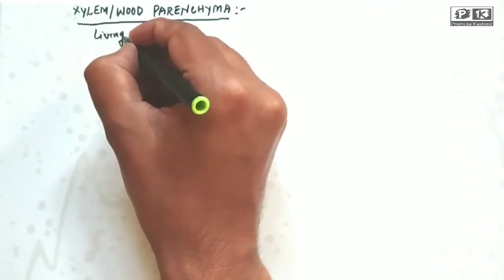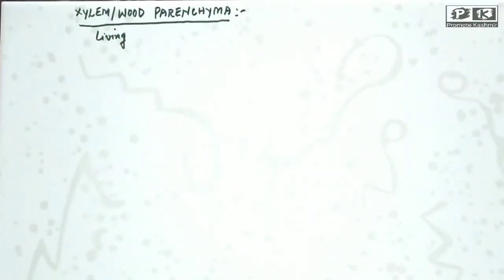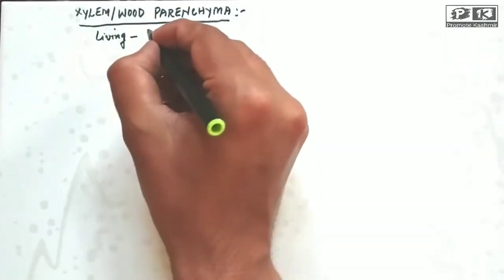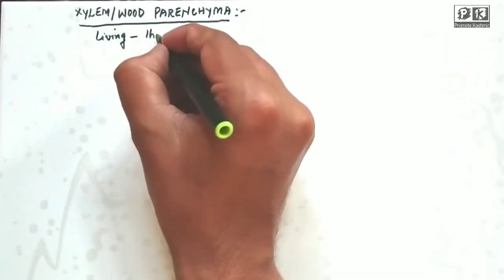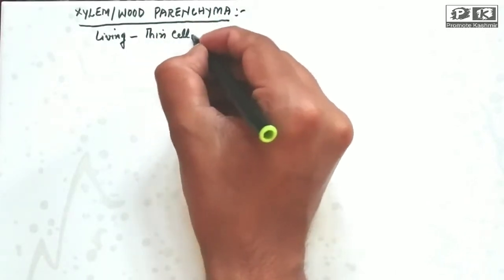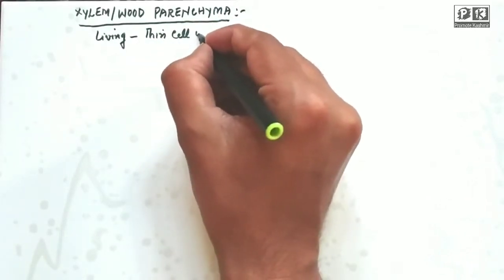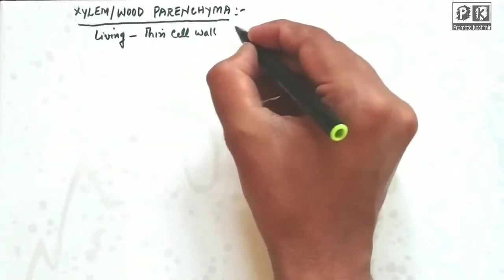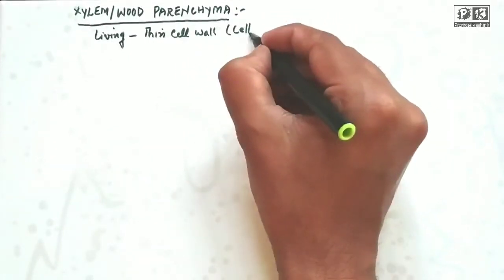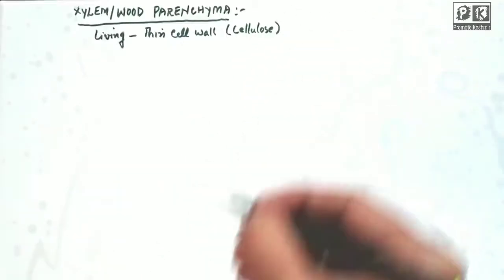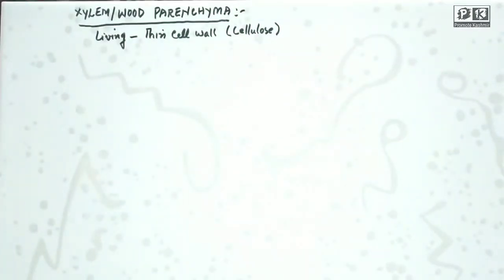Unlike other dead xylem elements, xylem parenchyma has thin cell walls. The other elements have thick cell walls. Because the cell wall is thin and contains cellulose rather than lignin, these are living cells.